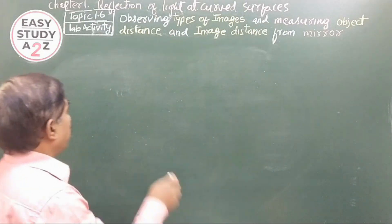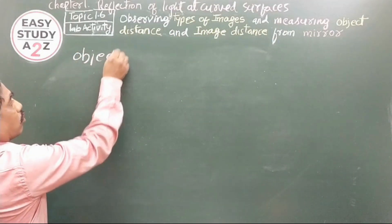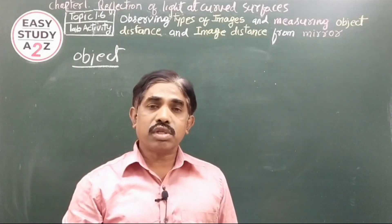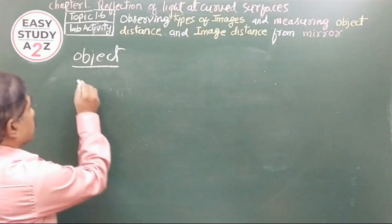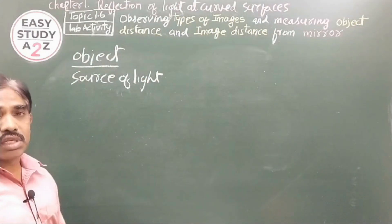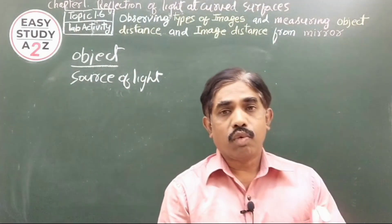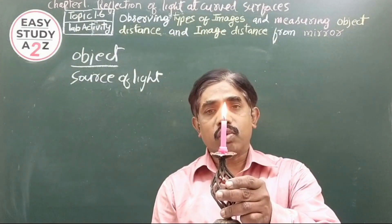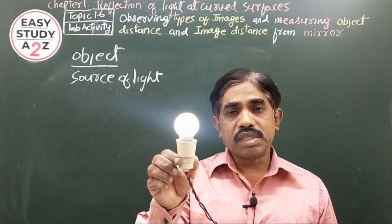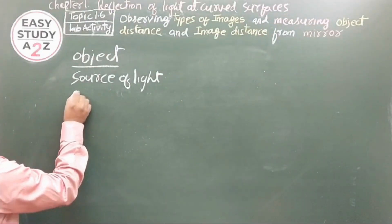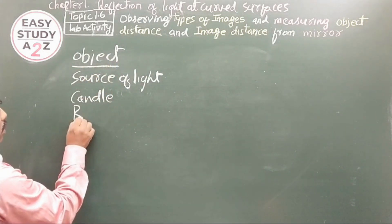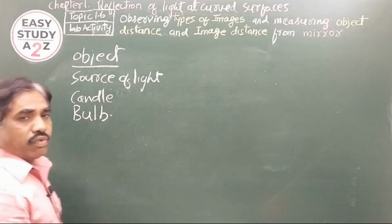Let me explain the terms. In optics, a source of light is considered as an object. For example, a candle is a source of light, so we consider it as an object. Similarly, a bulb is a source of light, and we consider a bulb as an object.